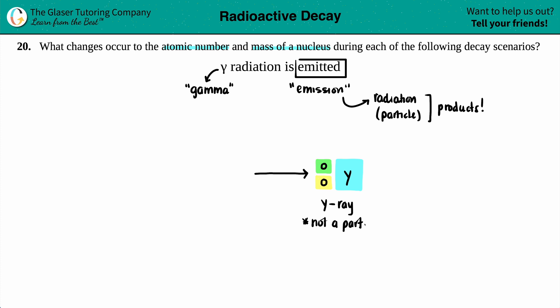And if you are emitting something that is not even a particle, you have no mass, no atomic number. Is there really going to be any change between the starting material and the ending material? Absolutely not.